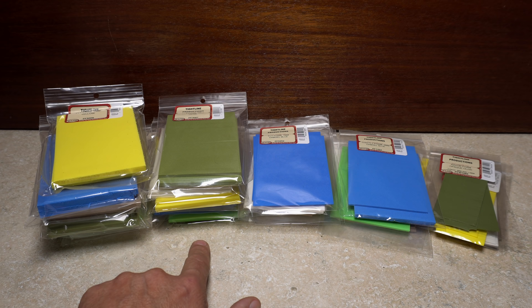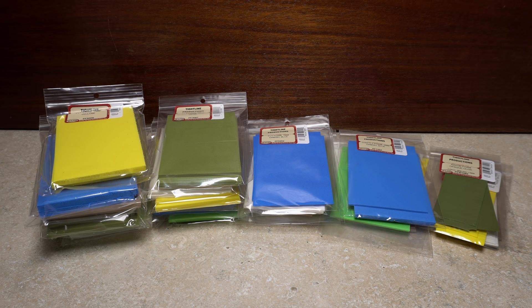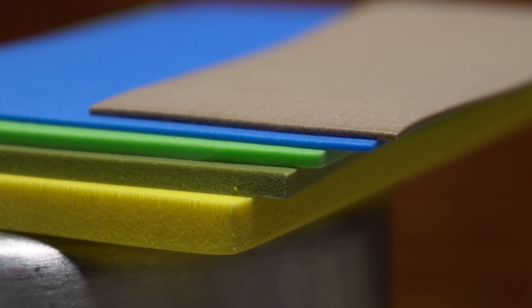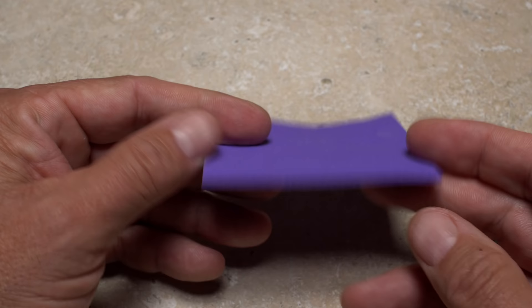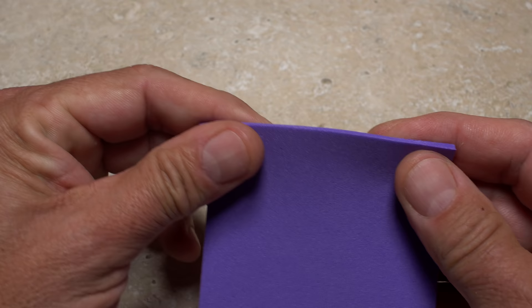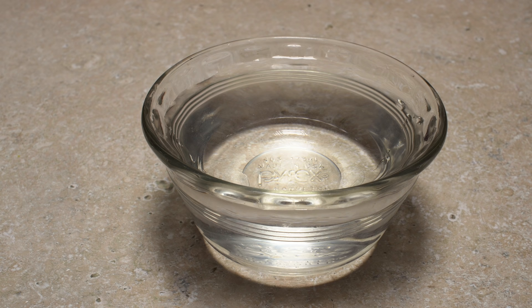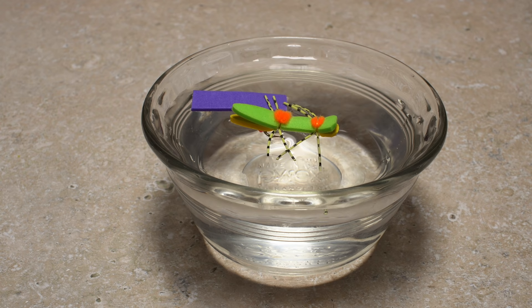Fly shops typically carry a variety of thicknesses as well, such as six millimeter, three millimeter, two millimeter, one millimeter, and a super thin offering commonly called razor foam. Each of these thicknesses has slightly different characteristics and uses, but let's go back to basics and talk primarily about two millimeter sheet foam. Sheets can be folded, have a little bit of stretch or give, and can be easily cut with regular scissors or a hobby knife.